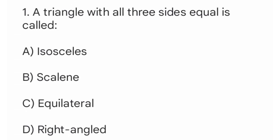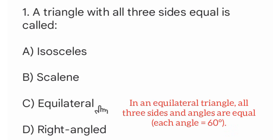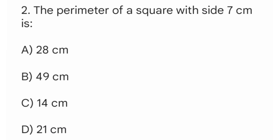Question 1: A triangle with all three sides equal is called? Question 2: The perimeter of a square with side 7 cm is?